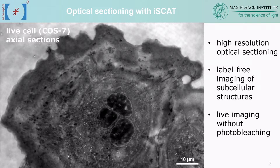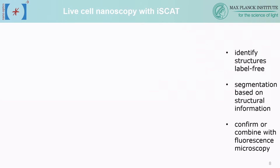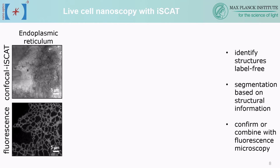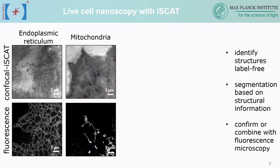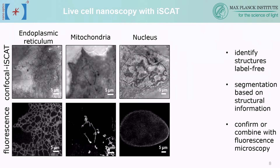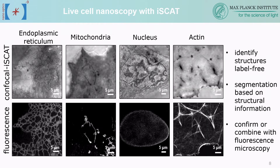In a third section you can see mitochondria appearing in the periphery. A lot of these structures require prior biological knowledge to identify, but we also combine everything with fluorescence to confirm identities. Here are examples of confocal iSCAT imaging with corresponding fluorescence imaging of labeled structures in live cells: the endoplasmic reticulum network in the periphery, mitochondria, the nucleus — quite prominent in iSCAT — and actin. You can nicely see the contrast changes that give you additional information.